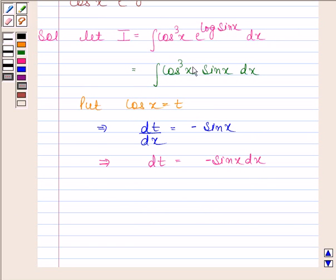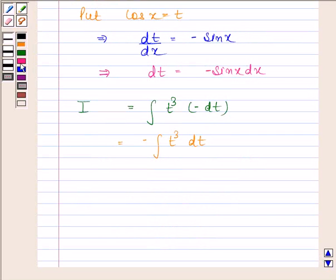By replacing cos x by t in this integral, we get I = ∫t³(-dt). This is equal to -∫t³ dt. We know that ∫x^n dx = x^(n+1)/(n+1) + c.